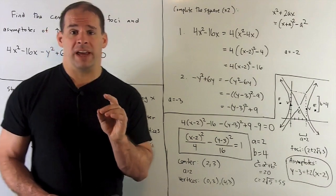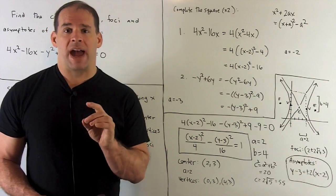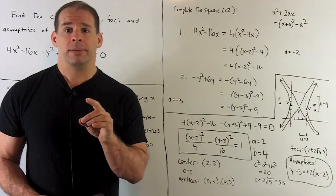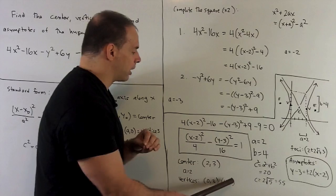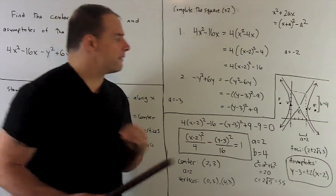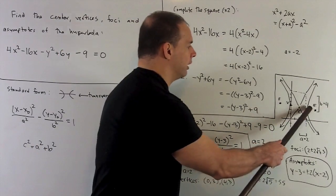Vertices. We're going to take the center, add and subtract our a, which is 2, from the x value. That'll give us the points (0, 3) and (4, 3). On the graph, they're going to show up here and here.